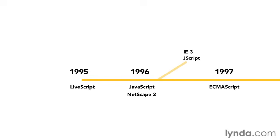JavaScript was developed in 1995 by Brendan Eich at Netscape, and first became built into a web browser with Netscape 2. It was originally going to be called LiveScript, but because Sun's Java language was the new big deal at the time, Netscape and Sun had an agreement to rename LiveScript to JavaScript to jump on Java's popularity bandwagon. Most people agree this was a bad idea and caused a lot of confusion — the two languages have nothing to do with each other. If you're new to programming they might look a little similar, but that's because they both look like C. JavaScript is not Java, not a light version of Java, and was not based on Java.